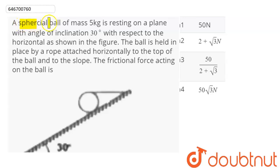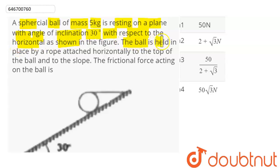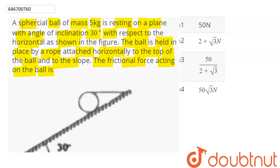The question is: a spherical ball of mass 5 kg is resting on a plane with angle of inclination 30 degrees with respect to the horizontal as shown in the figure. The ball is held in place by a rope attached horizontally to the top of the ball and to the slope. The frictional force acting on the ball is?